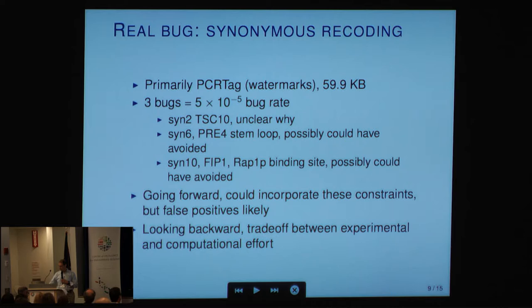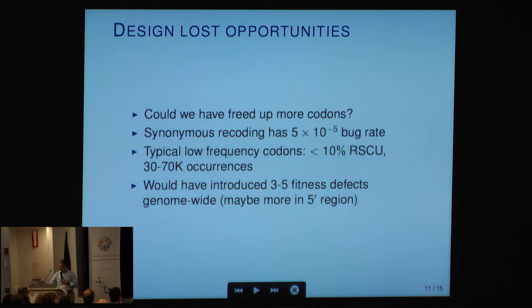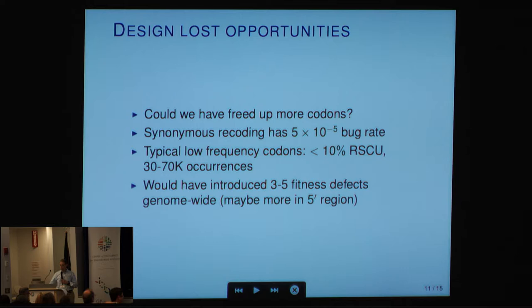In this whole project, five bugs total. No bugs with the stop codon swaps, tRNA deletions, or repeat deletions. I think actually the biggest design flaw was lost opportunities — being a little more aggressive in the design. For example, there are several codons with codon frequency less than 10% relative usage, with 30,000 to 70,000 occurrences. Applying the 5 times 10 to the minus 5th bug rate, maybe we would have had three to five more fitness defects — a little bit more because these are more in the 5 prime region where there's some effect on transcription.